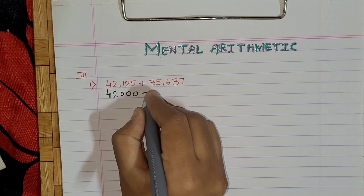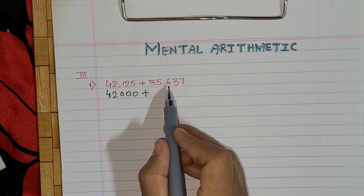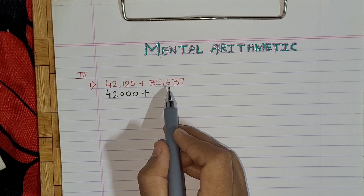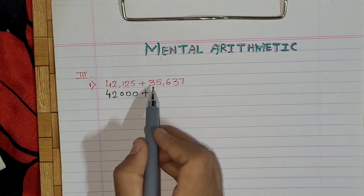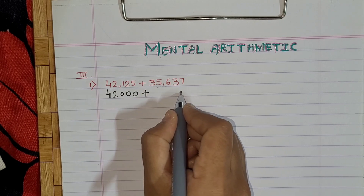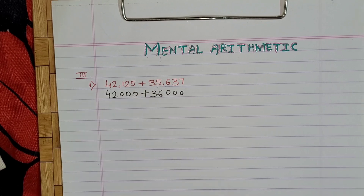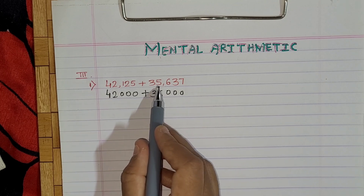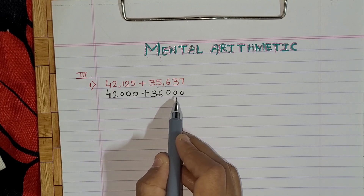The same thing we have to do here. Now we have to round off the second number. We have to see the digit at the hundreds place. If the digit at the hundreds place is 5, 6, 7, 8, or 9, then replace the units, tens, and hundreds by 0 and add 1 to the thousands place. So it becomes 0, 0, 0, and 5 plus 1 is 6, with 3 remaining unchanged — that gives us 36,000. So we have rounded up both numbers: 42,000 and 36,000.